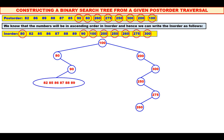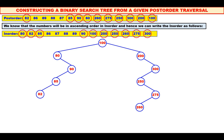Now, among 82, 85, 86, 87, 88, 89, which is the root? See the post-order — 85. Make 85 and mark it in the inorder as well. 82 is to the left of 85, whereas the remaining four elements are to the right of 85. Therefore, take 82 to the left and the remaining four to the right.